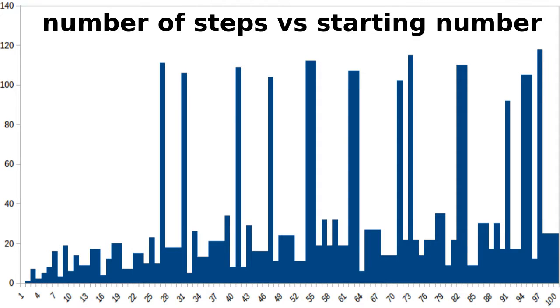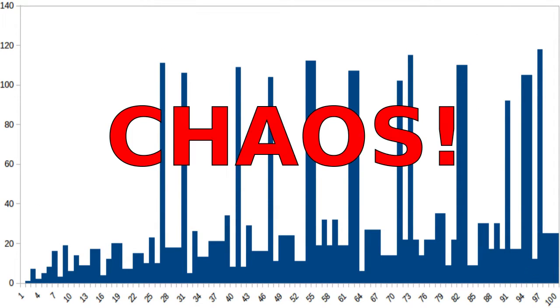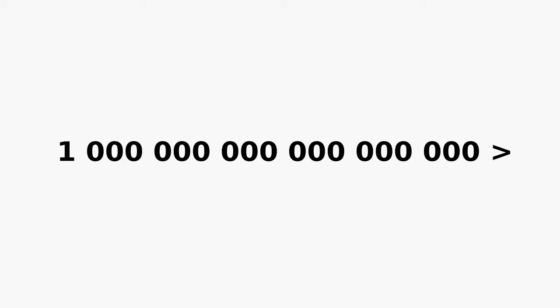For starts up to 100, the steps fluctuate between about 100 and below 40 for seemingly no reason. Despite the chaotic nature of the sequence, all numbers below a quintillion have been confirmed to reach 1. But even this is not enough to prove that it holds for all numbers.